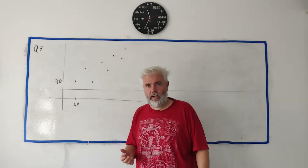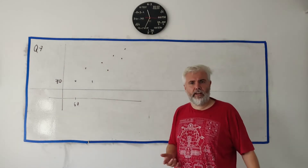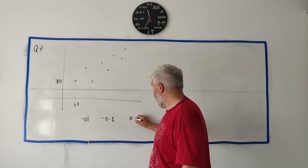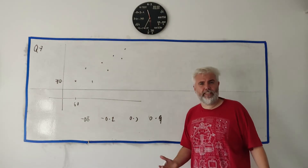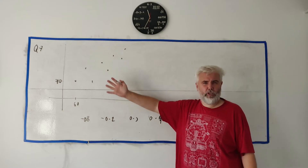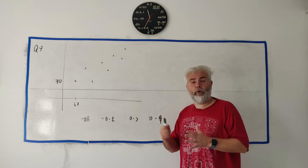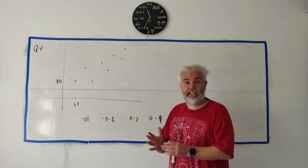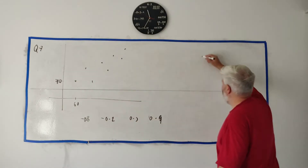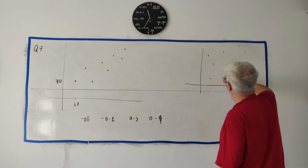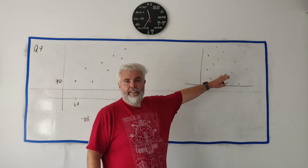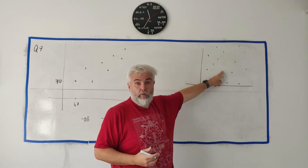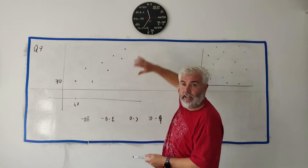They ask you to pick the correct correlation coefficient from four values: minus 0.8, minus 0.2, 0.3, and 0.9. Your calculator can compute this directly. But visually: if the dots look like random noise with no pattern, the coefficient is close to zero. If the dots form something close to a straight line, it's close to one or minus one. Looking at this scatter graph, I can see a clear line pattern, so it shouldn't be close to zero.